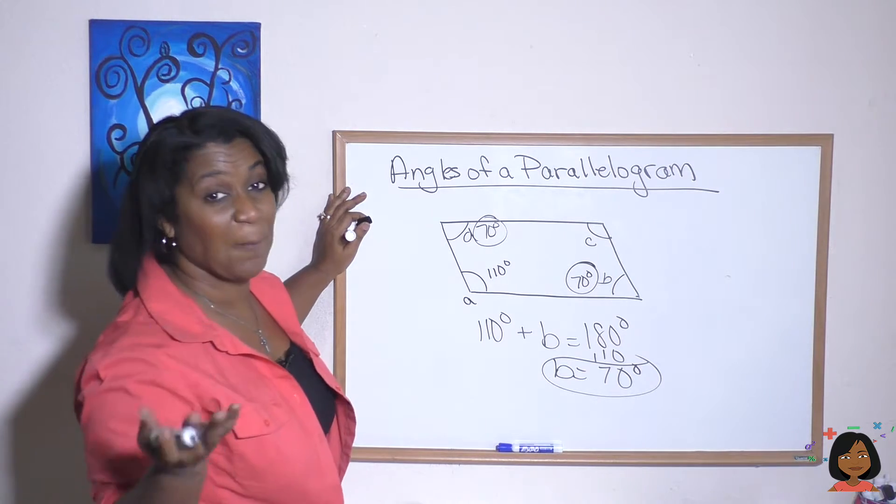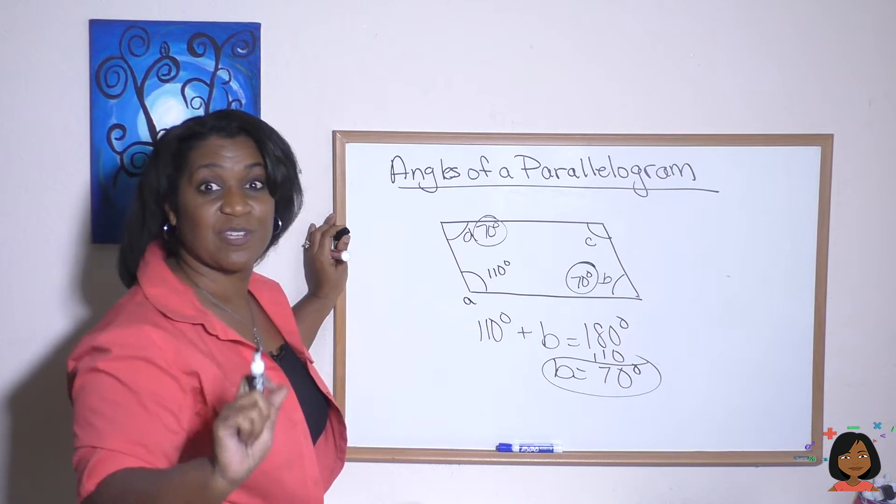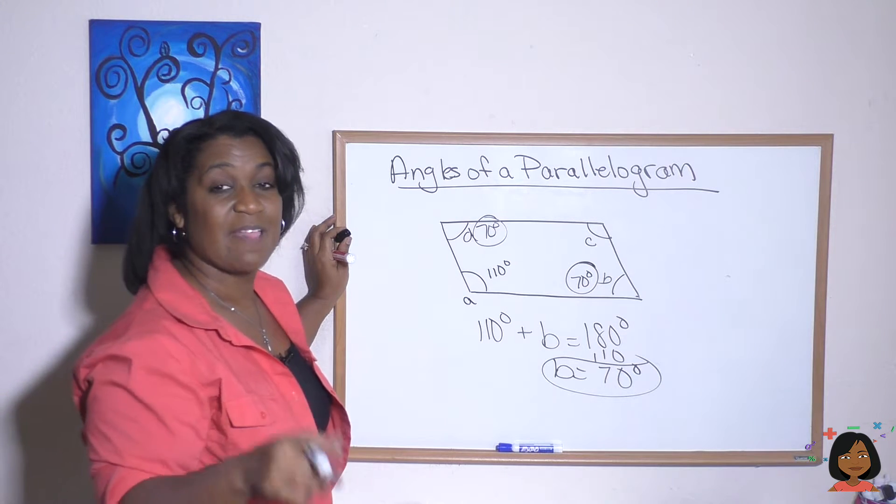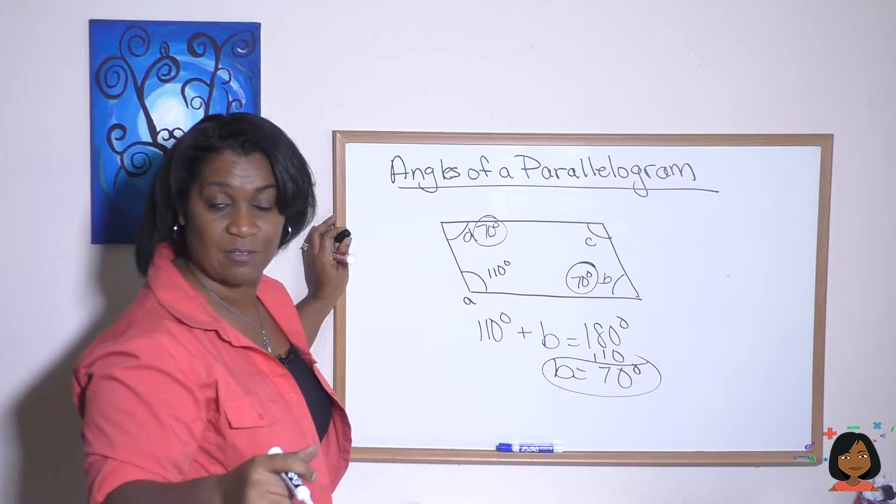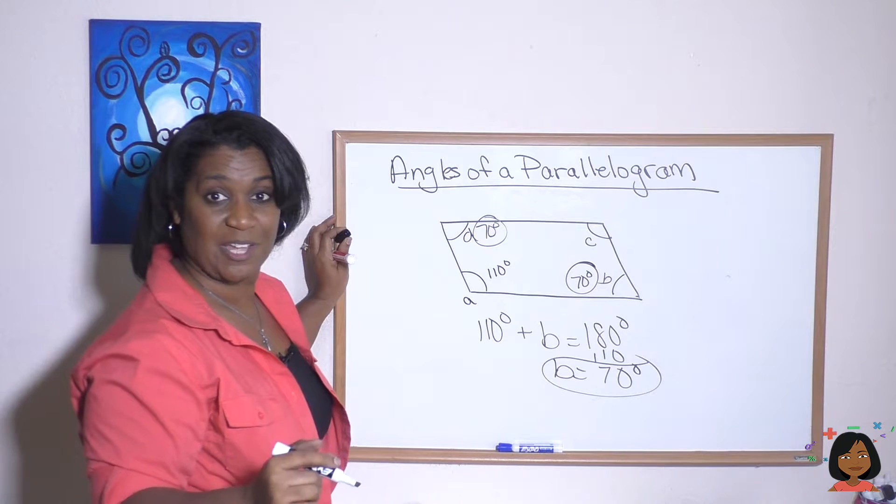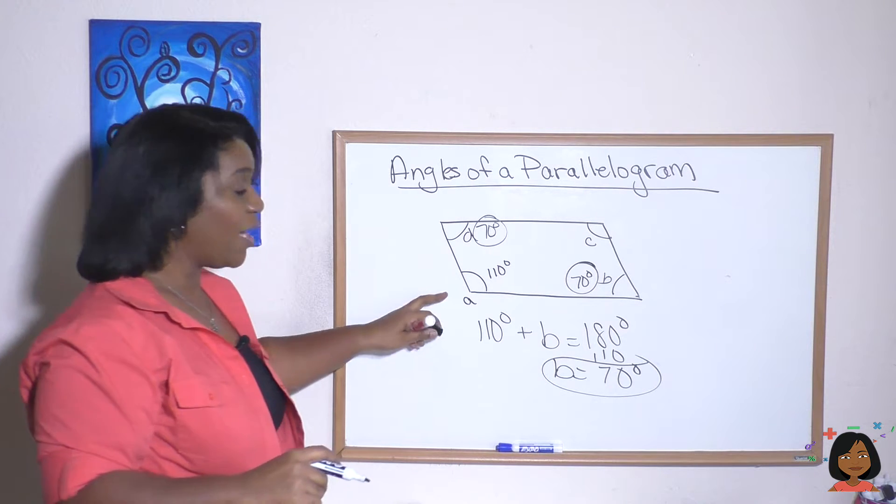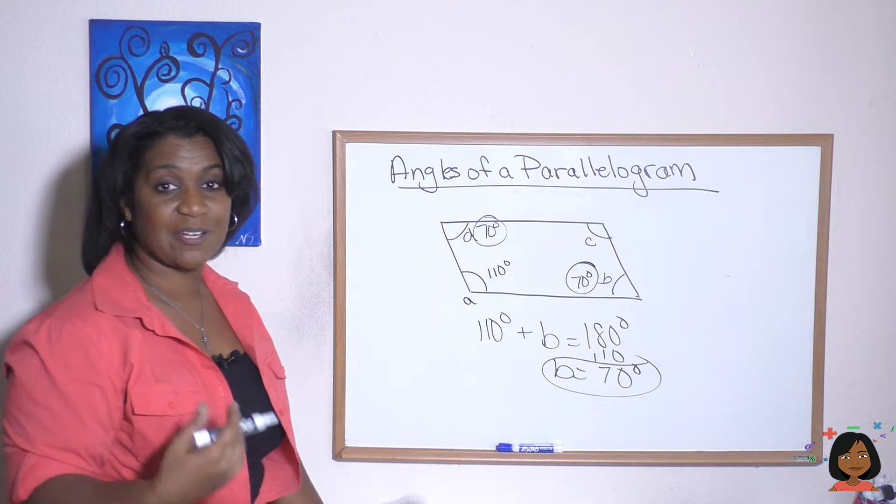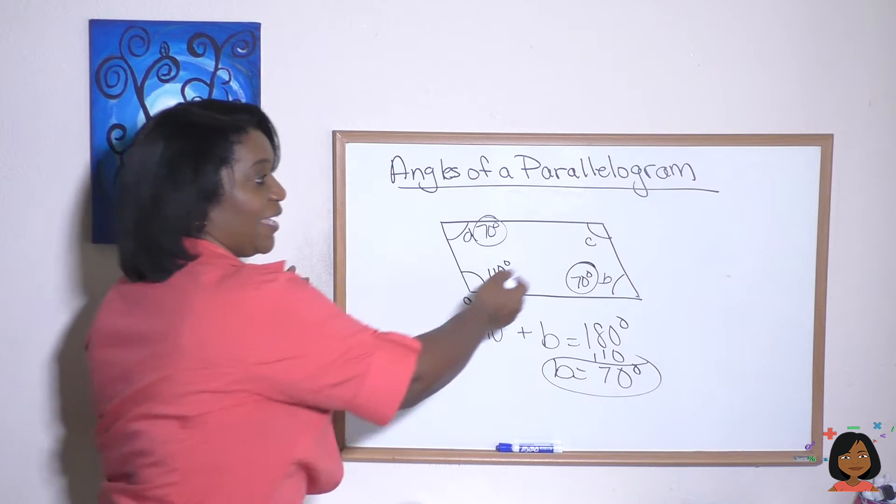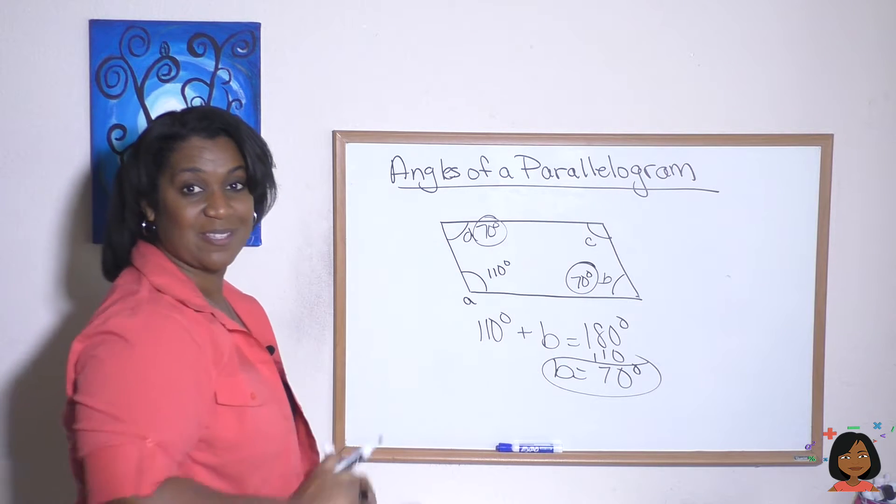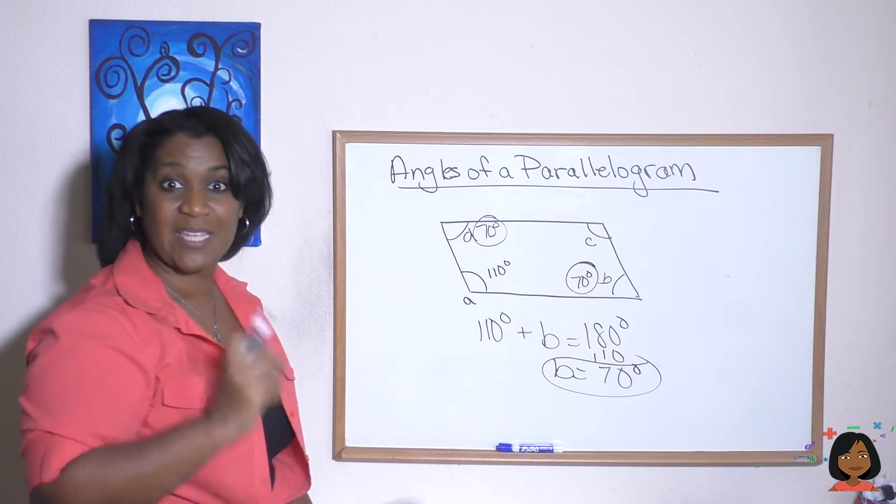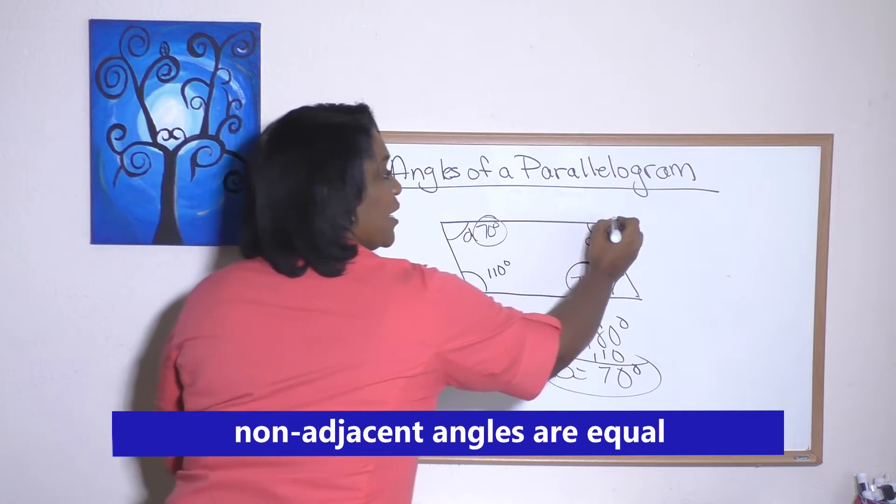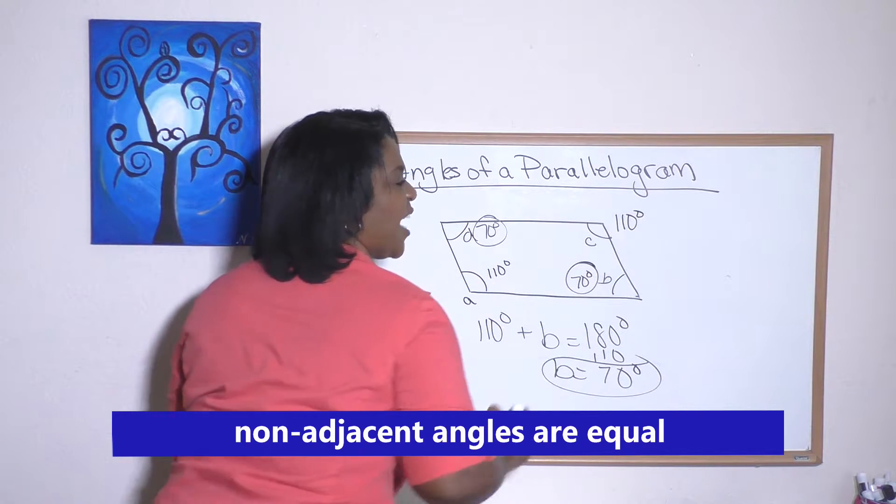There's a couple of ways we can find out what C is. There's another rule with parallelograms, that non-adjacent angles will equal each other. So what is a non-adjacent angle to angle A, which is 110 degrees? The only one that's non-adjacent is angle C. It's across from it. So it means that they will equal each other. So C equals 110 degrees.